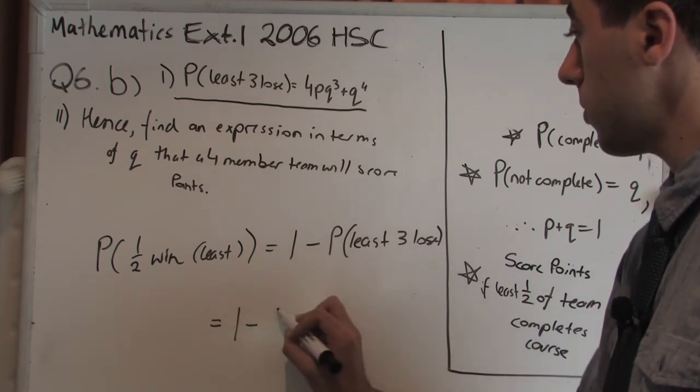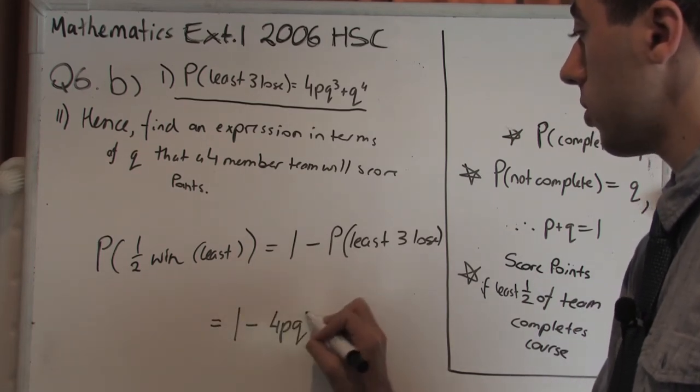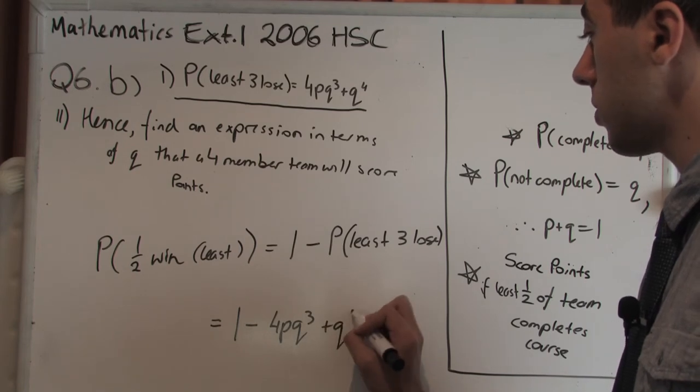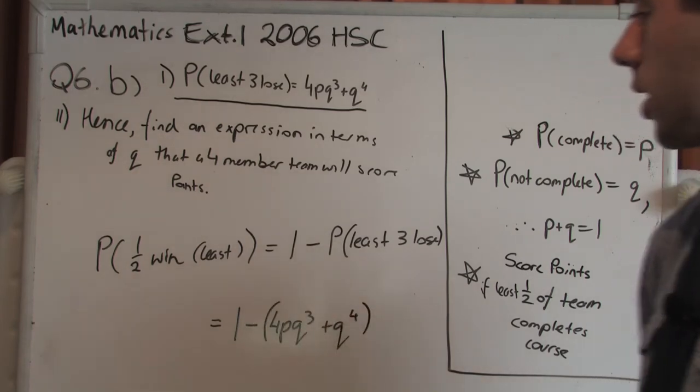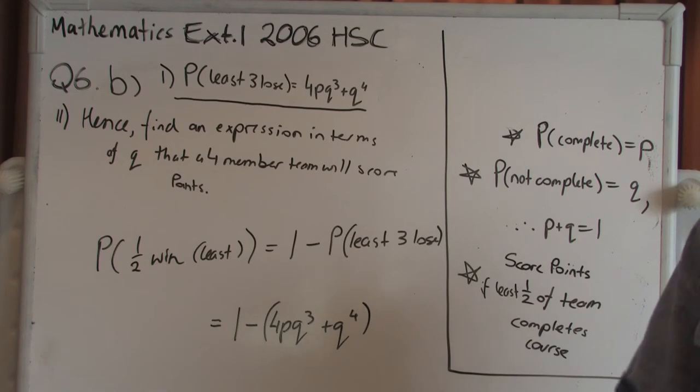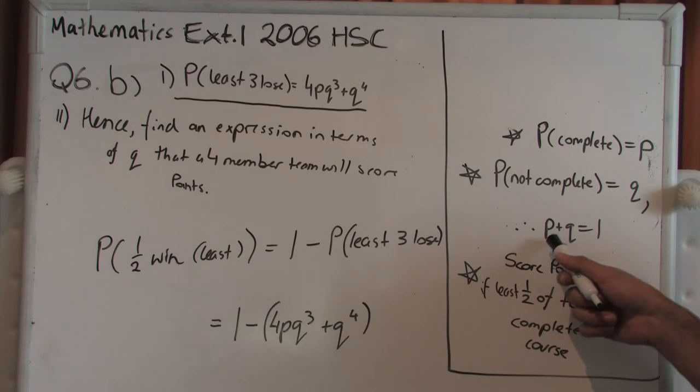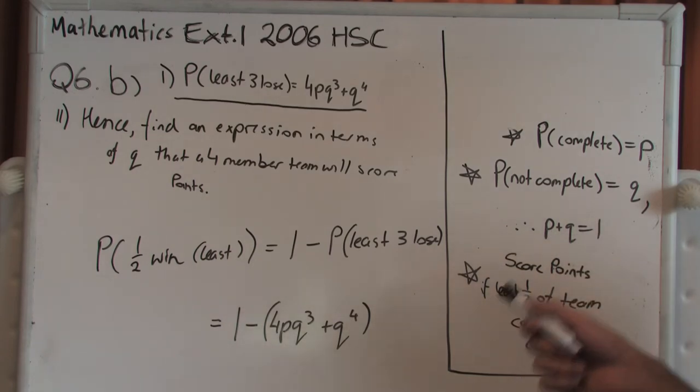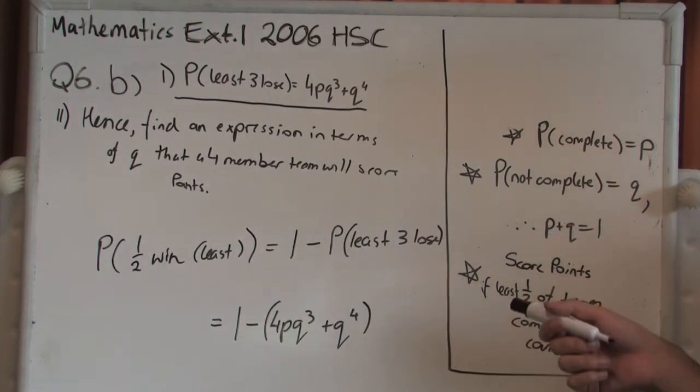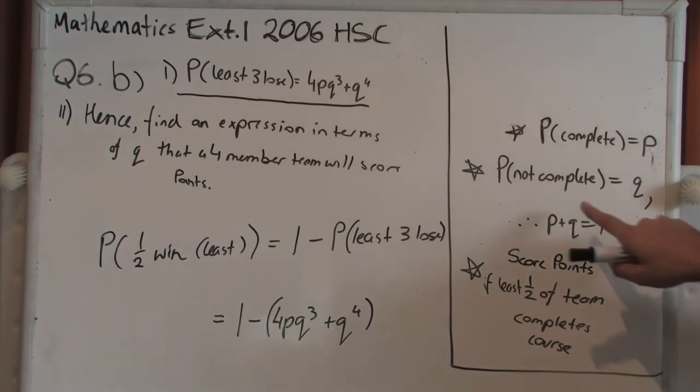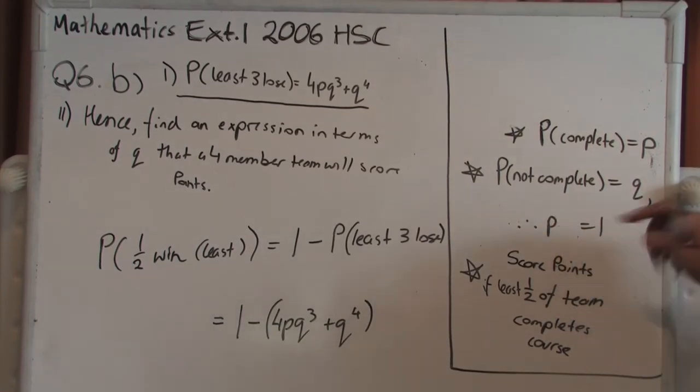From part I, we know that that probability is in fact equal to 4pq³ plus q to the power of 4. It says strictly in terms of Q, but we have a P in here. But from what we know, because there's only two events here, they are complementary events, so we can rearrange this to get that P is actually equal to 1 minus Q.